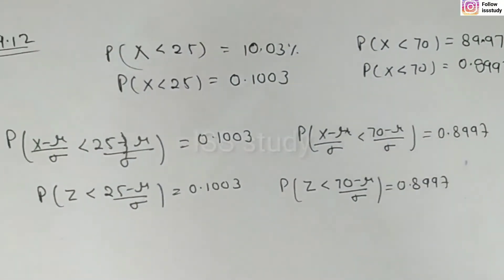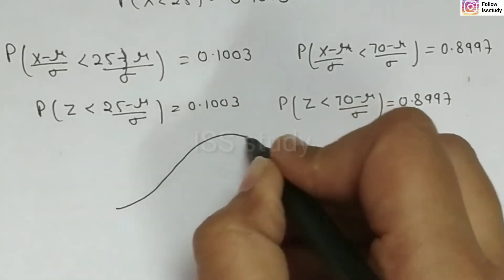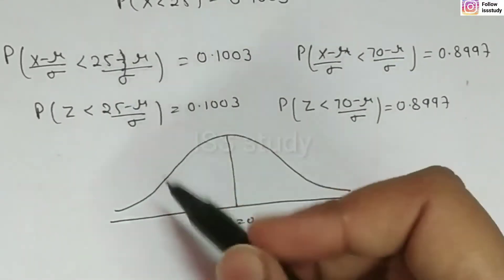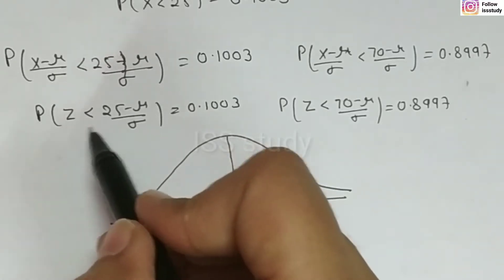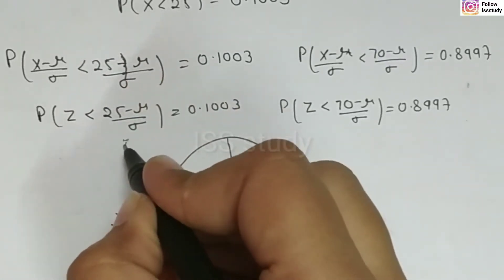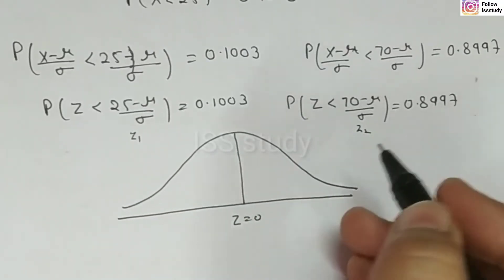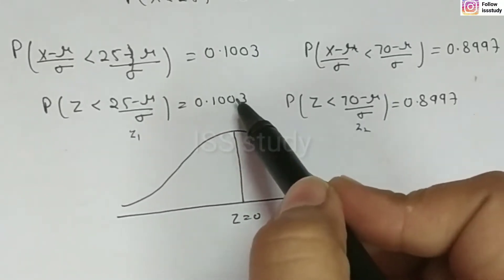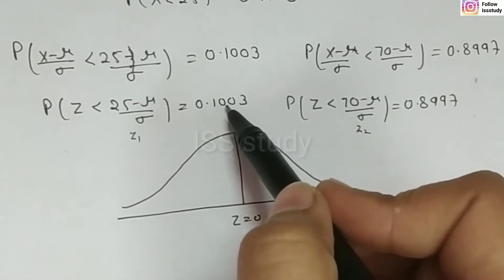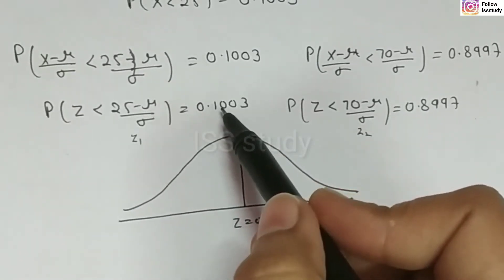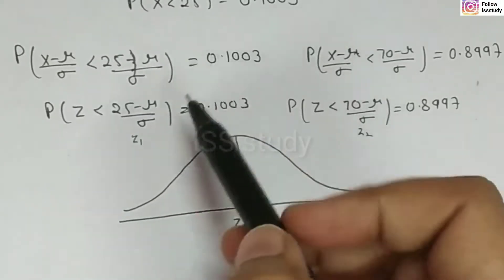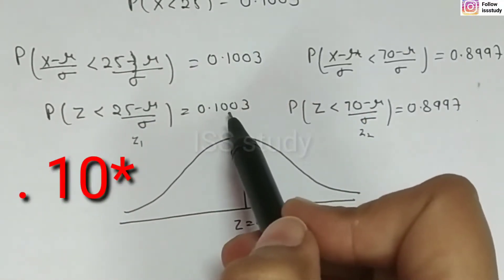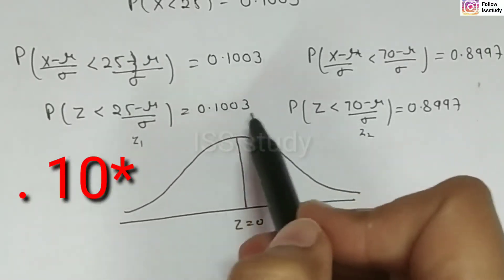Now if we plot this graph, you will understand the whole solution. On the normal curve, Z equals 0 is at the center. We have Z1 on the left side and Z2 on the right side. When Z is less than Z1, the probability is approximately 0.10, meaning about 10% of the area is to the left of Z1.